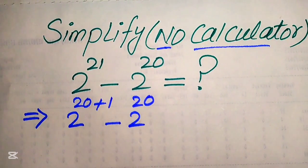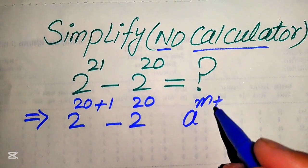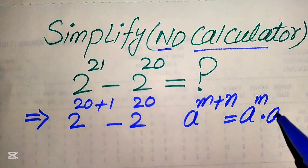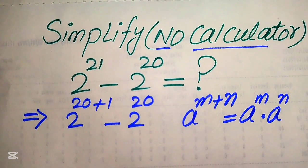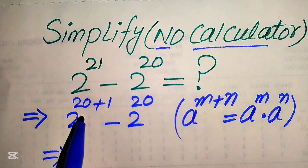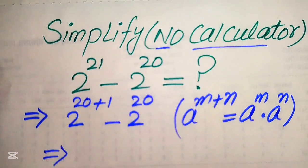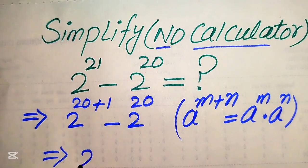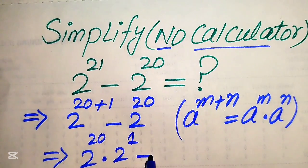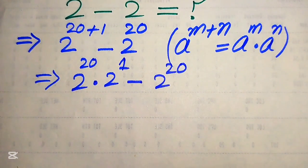You know this law well: if we have a to the power of m plus n, it equals a to the power of m multiplied by a to the power of n. According to this exponent law, we break the exponent of the first term, and it is written as 2 to the power of 20 multiplied by 2 to the power of 1, minus 2 to the power of 20.